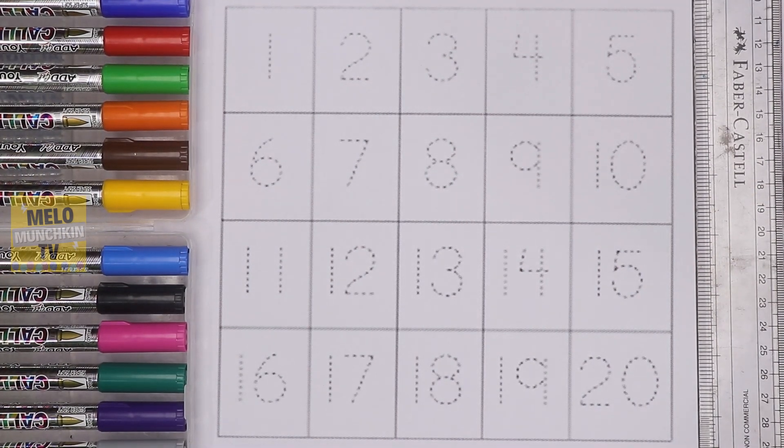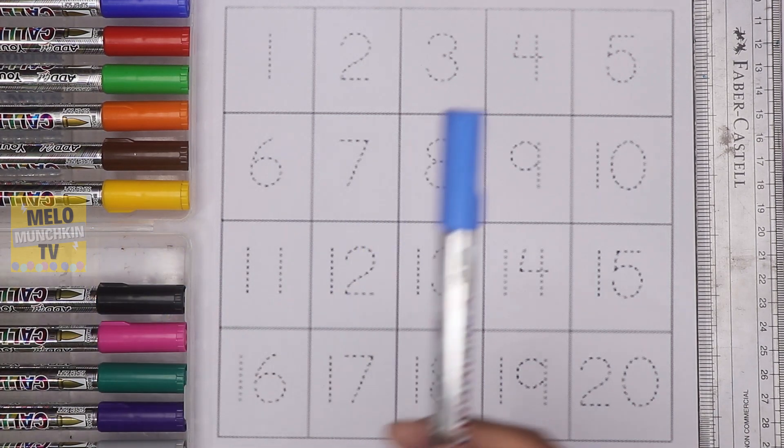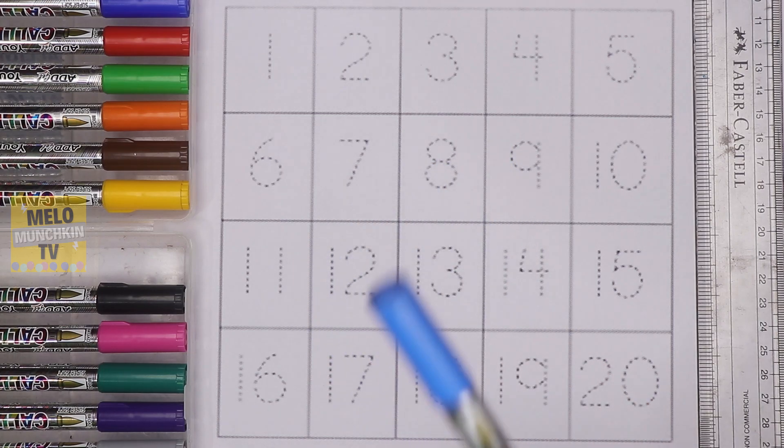Hello kids! Today in this video we are going to learn numbers from 1 to 20, and along with it we'll learn colors. Let's get started! First, I'll take blue color. This is blue color.